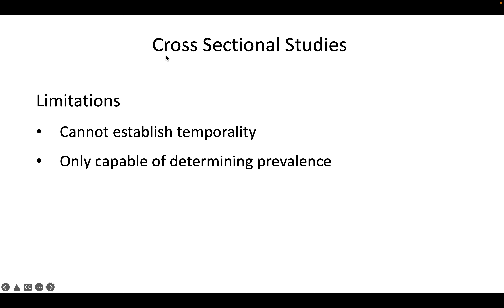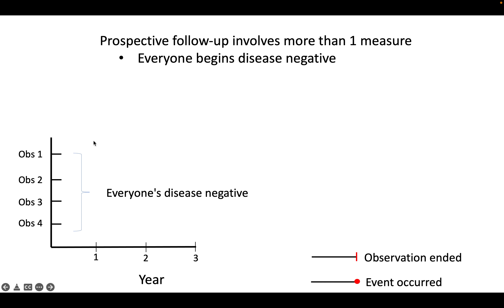There are some limitations to cross-sectional studies. You can't establish temporality very well, and it's only capable of determining prevalence — whereas incidence is the amount of newly occurring disease over time, and prevalence is the amount of disease right now. These two things are pretty related, and I have whole videos on the relationship between prevalence, incidence, and person-years.